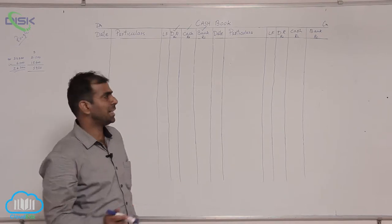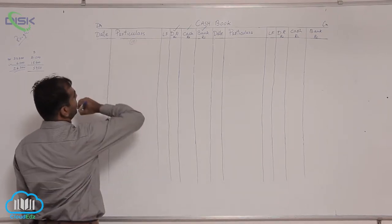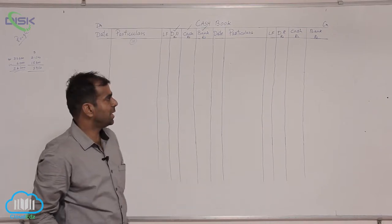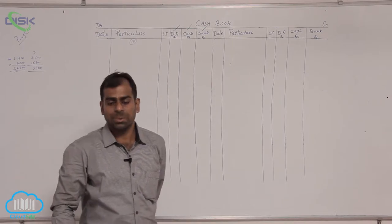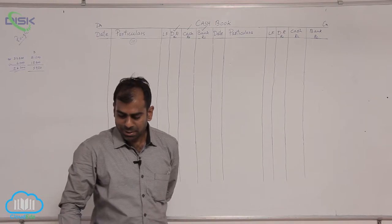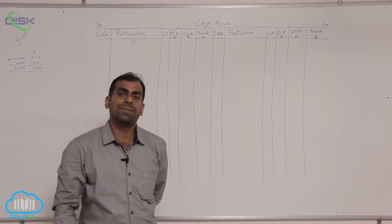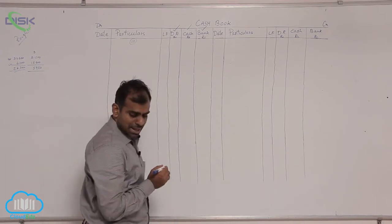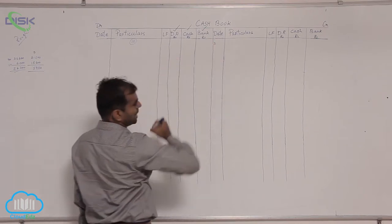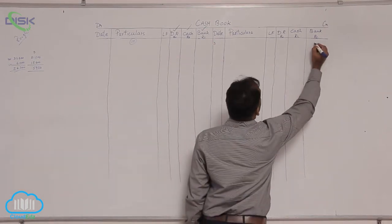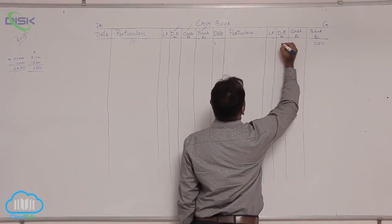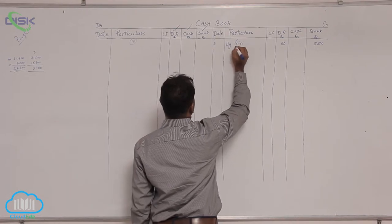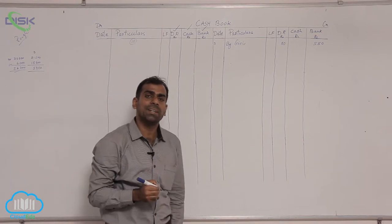I am taking the 10th problem. Taking directly the transaction of the 3rd: issued check to Giri, discount received 50. Issued check to Giri 550, discount received 50 — it is a payment. Therefore we record this transaction of the 3rd on the credit side. I am mentioning the 3rd date; since a check is issued, enter 550 in the bank column and 50 in the discount received column. Giri is the person to whom we are giving the check, hence his name on the credit side in the particulars column.